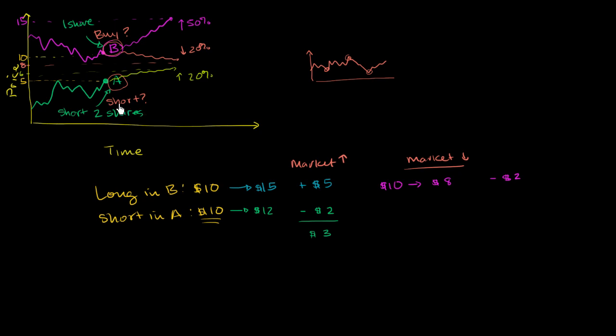But when the market went down, I was right. A is not that great of a company, so it goes down more. Let's imagine that it goes down by 50%, so A goes down by 50% all the way to $2.50 per share. So it's now at $2.50 per share.